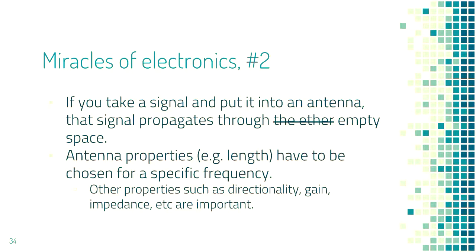The second miracle of electronics — after the Fourier transform — is that if you take a changing voltage signal and put it into an antenna, it propagates through free space and then if I have an antenna of similar properties at the other end, that voltage appears on it. Drive a voltage here, see a voltage here. However, it's like a wire but worse — it only transmits a specific band of frequencies. A pair of antennas might transmit FM radio at approximately 100 megahertz, so if I drive the transmitting end with frequencies around 100 MHz, I will see that signal at the receiving end.